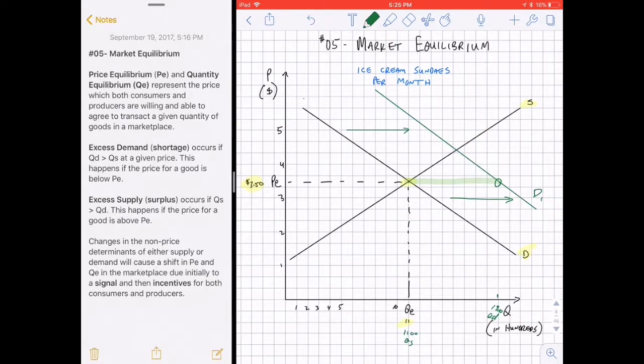Now, the factors that affect the shift in one of the two curves is a signal to the rest of the marketplace that something has changed. All those non-price determinants that we looked at that shift the demand or the supply curve are signals. In this case, the heat wave was the signal that affected the taste and preferences of consumers for ice cream sundaes per month. That signal creates either a surplus or a shortage at the original equilibrium price. But as we can see, a new equilibrium price and quantity is suggested by the intersection of these lines.